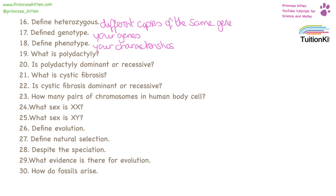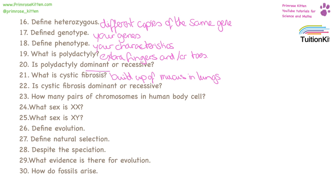Polydactyly is where you have extra fingers or toes, and polydactyly is dominant, which means you only need to have one version of the polydactyly gene to express the phenotype of having extra fingers or toes. Cystic fibrosis is a mutation in a gene which stops water and ions moving about properly, and it causes a buildup of mucus in the lungs which makes it hard for people to breathe. Cystic fibrosis is recessive, meaning you need to have two copies of the cystic fibrosis gene to show the disease.